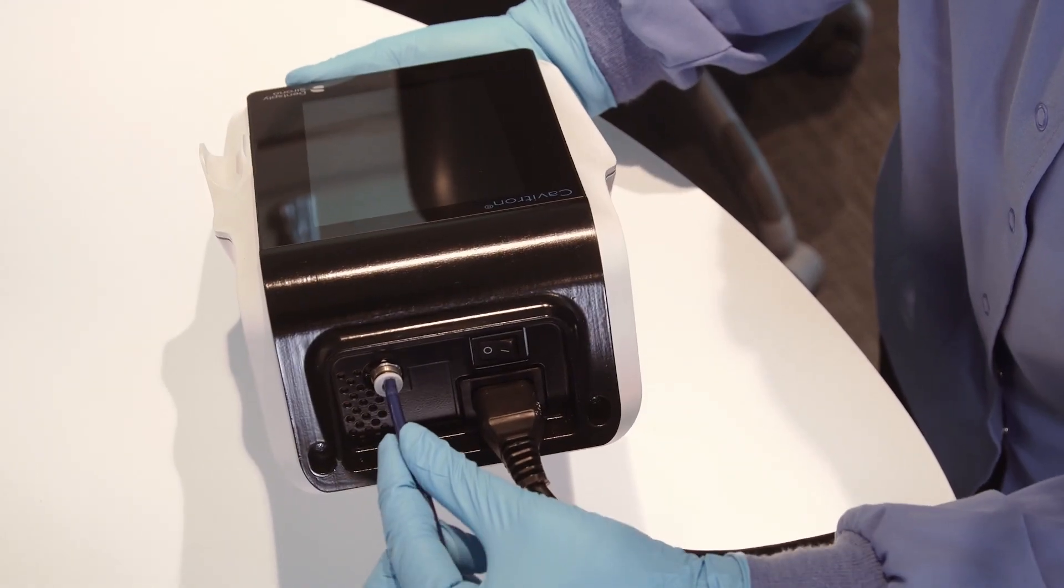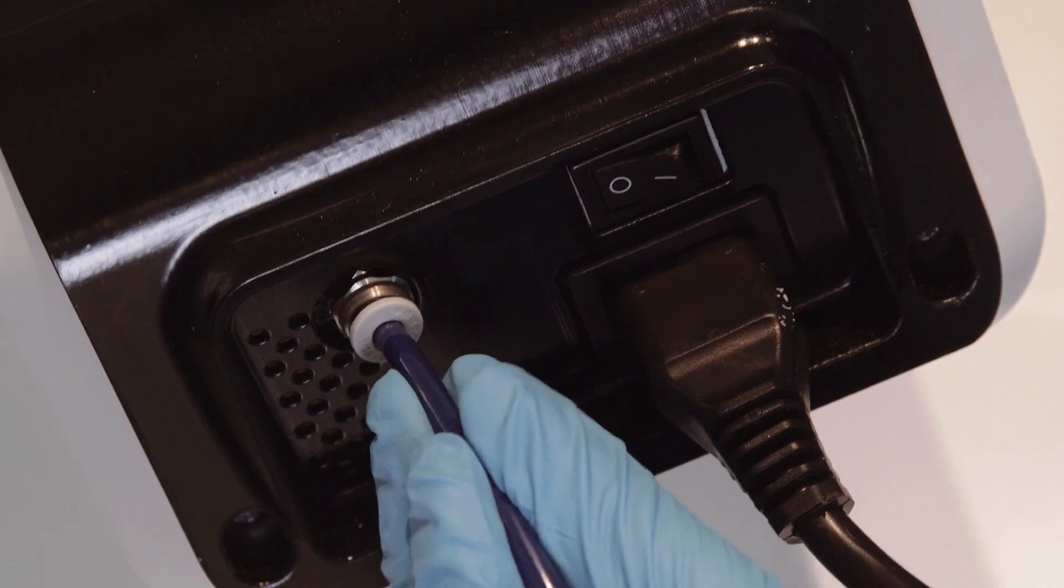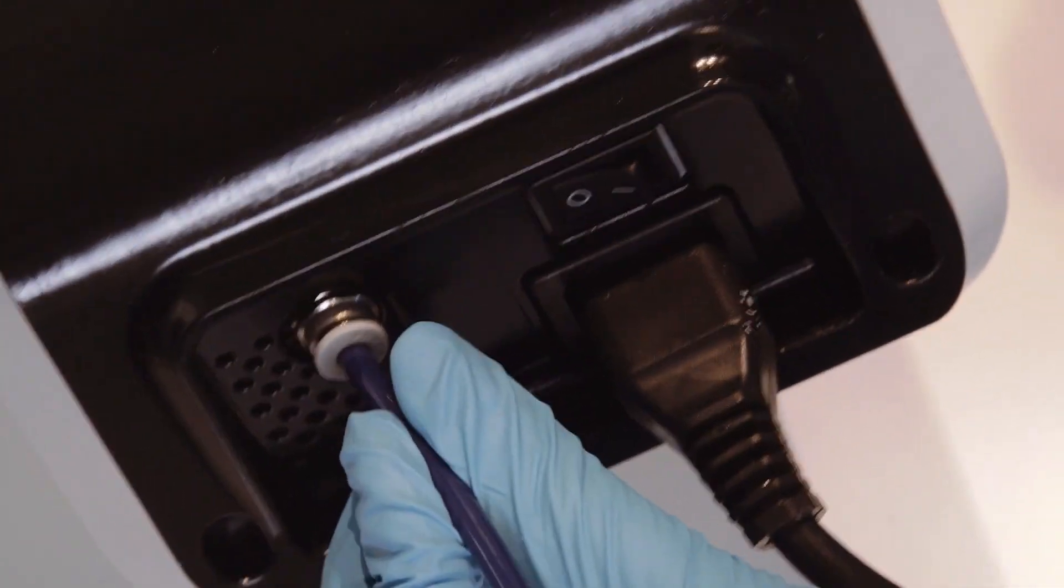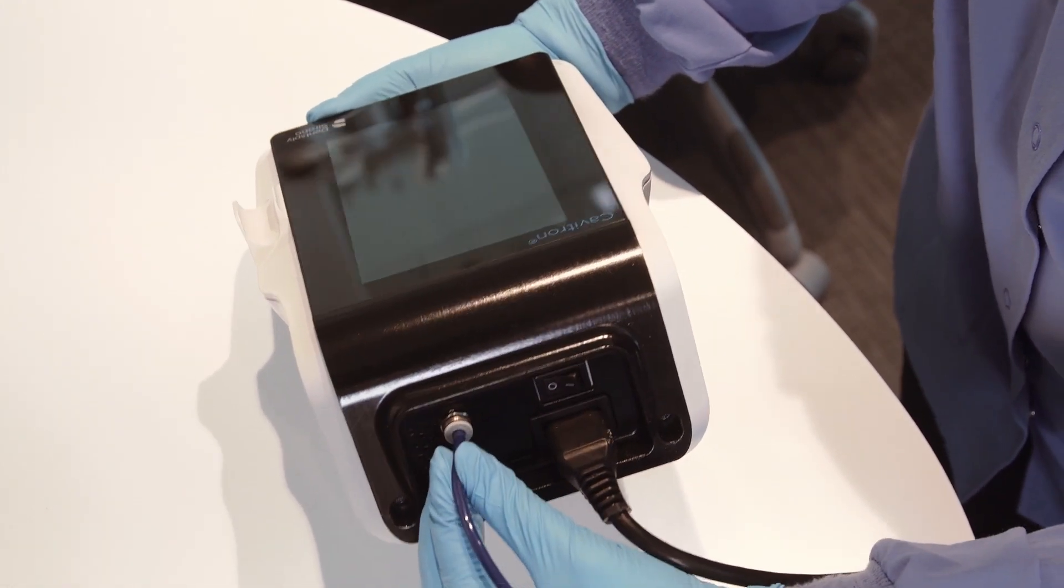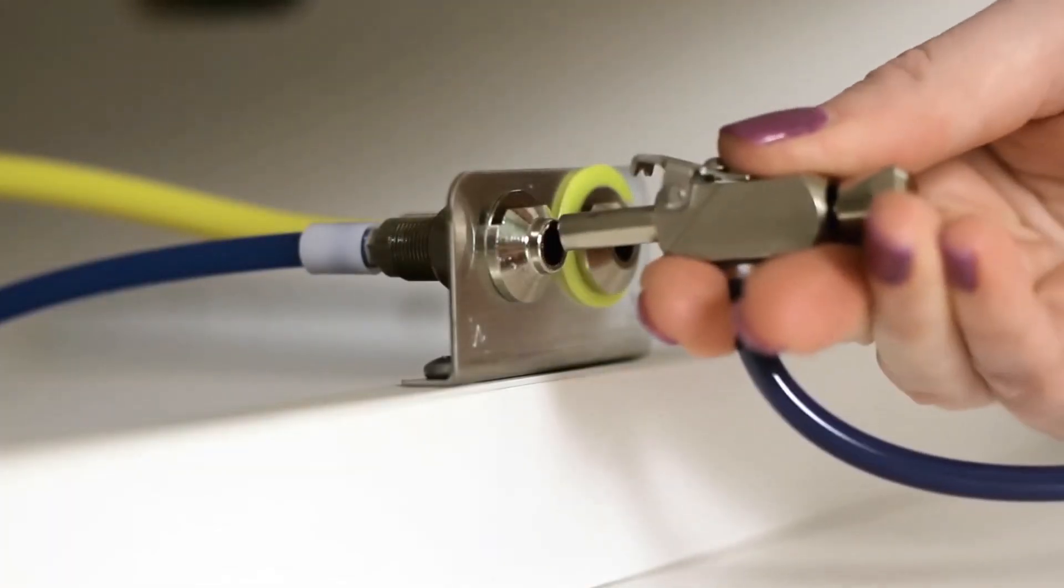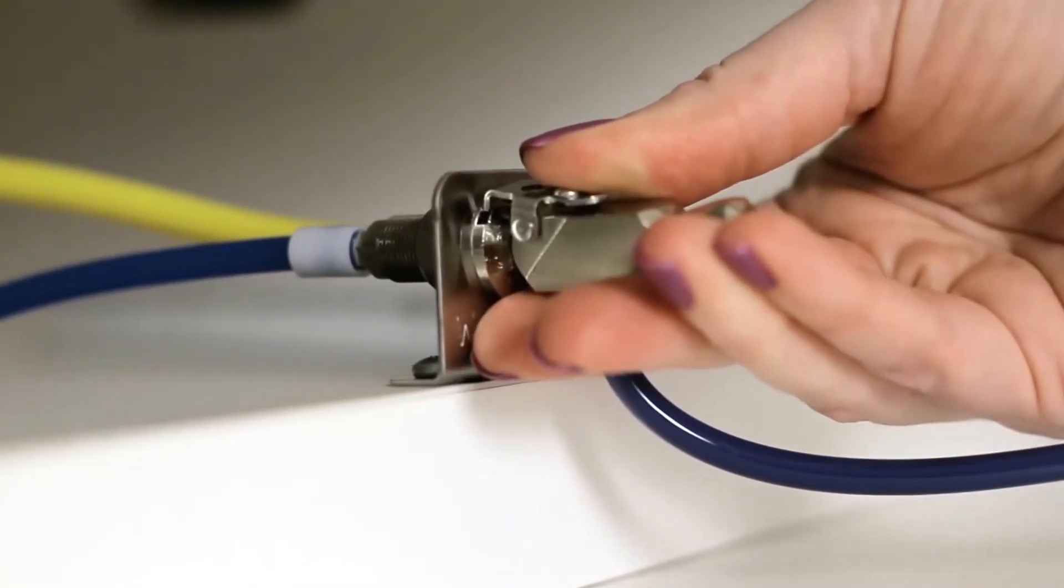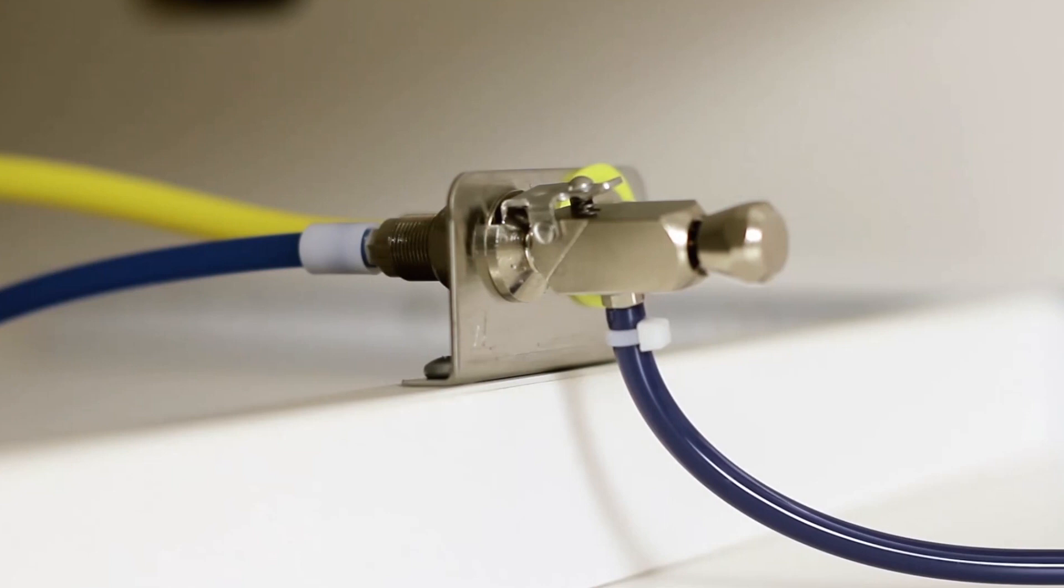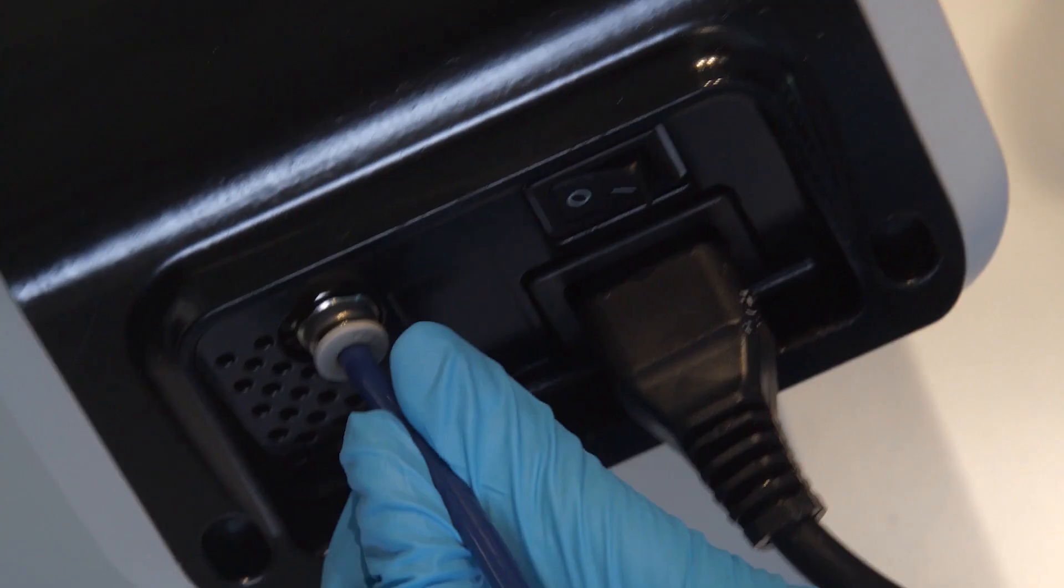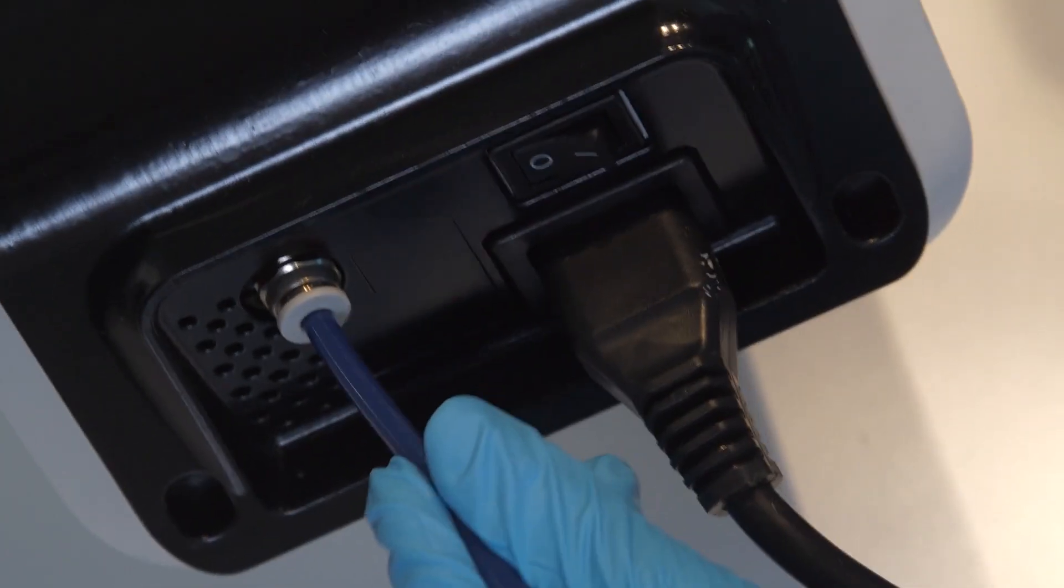To connect the water supply, insert the blue water line hose into the gray water inlet connector until it is fully seated. Tug gently to ensure the water line is secure. Connect the quick disconnect on the other end of the hose to the dental office water supply or a Cavitron dual select dispensing system. Be sure to inspect all of the connections to make certain there are no leaks.